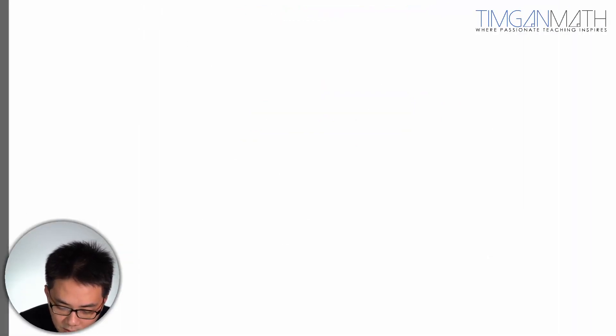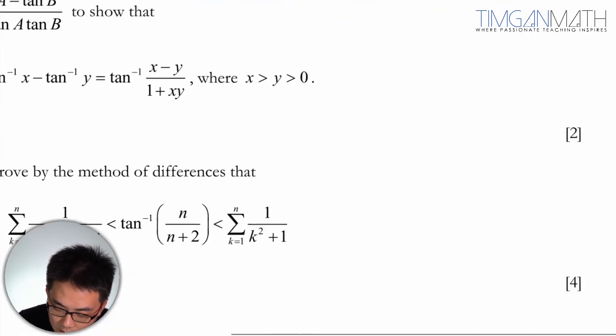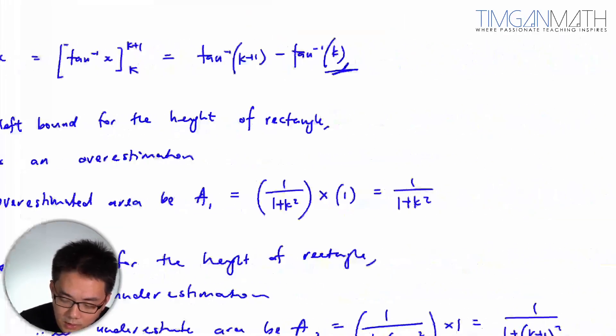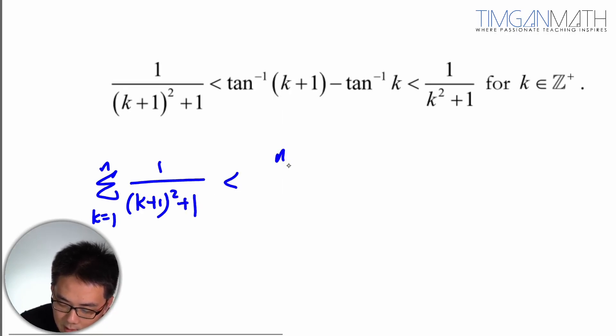So from this expression here, we know that actually what you could do is you just attach n because this is one to n, this is one to n. So I'm just going to attach the sigma notation throughout here. This will be attaching k equals to one. k plus one squared plus one will be less than if we just add this up. Tangent inverse k plus one minus tangent inverse k.